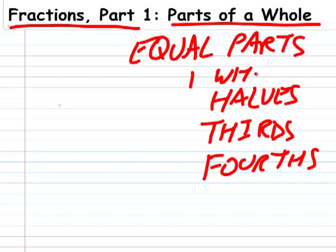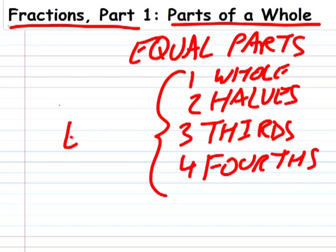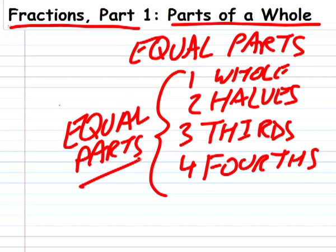Anything in one piece is a whole. Two equal parts are halves, three equal parts are thirds, and four equal parts are fourths. You can have as many parts as you like, as long as they're equal parts, they're fractions.